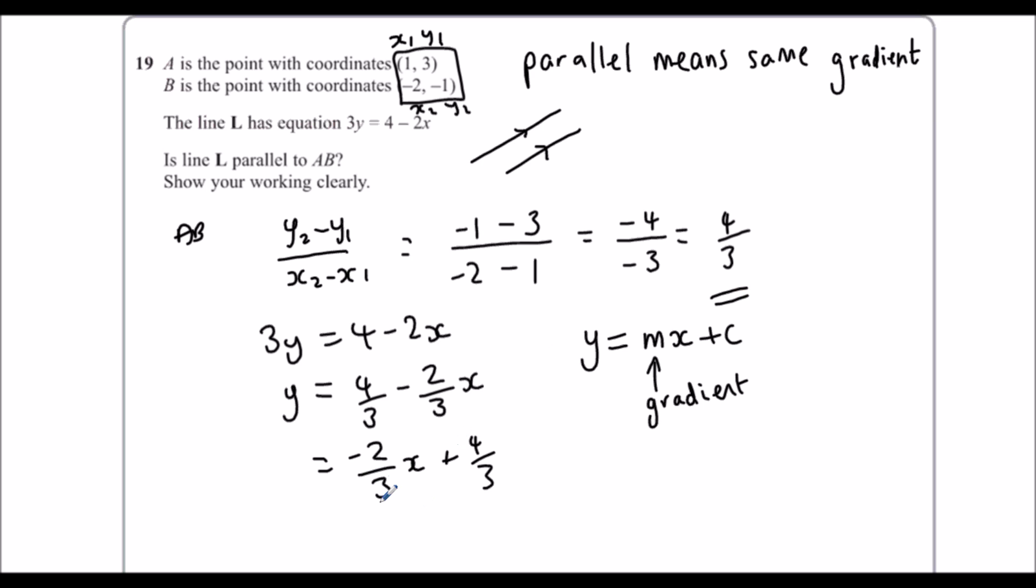Now are they the same gradient? Well this one's got a gradient of minus 2 over 3, this one's got a gradient of 4 over 3. So they are not parallel because they've got different gradients.